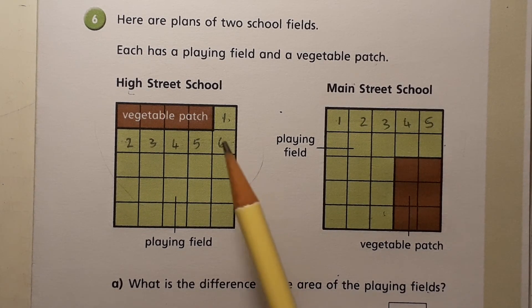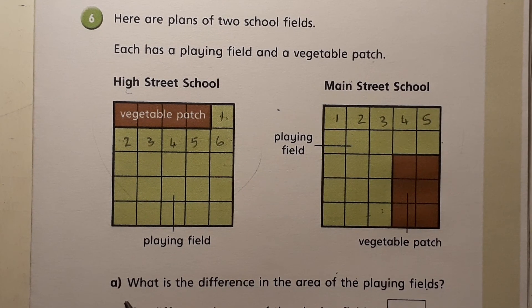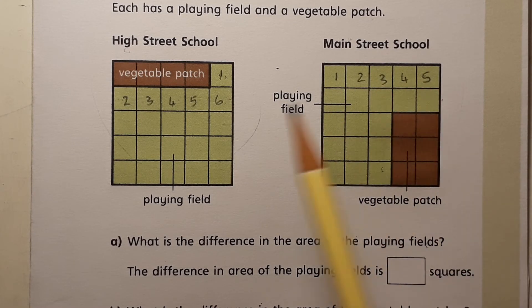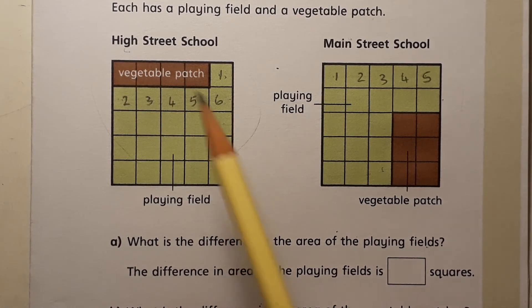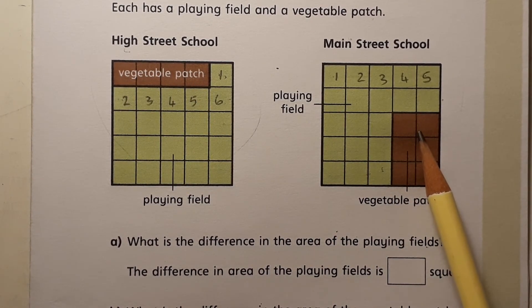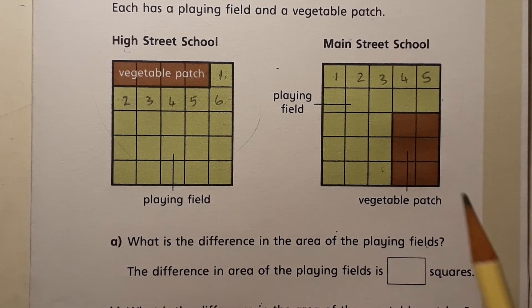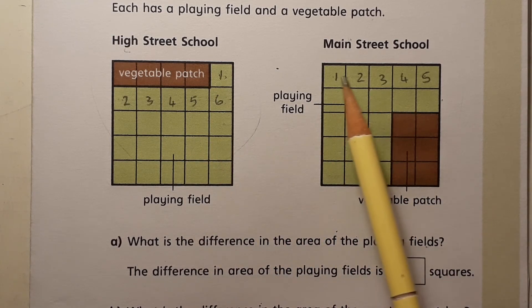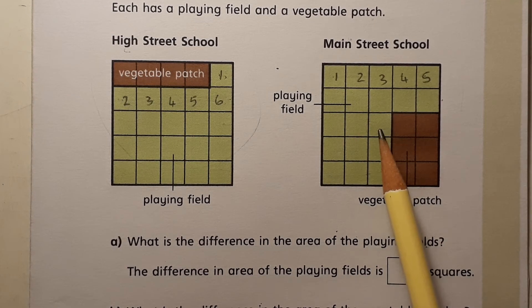And the first part says, what is the difference in the area of the two playing fields? And the playing fields are the parts that are marked in green because the vegetable patch is marked in brown on both schools. So you need to work out the area and see whether there is a difference. Do that by counting the squares.